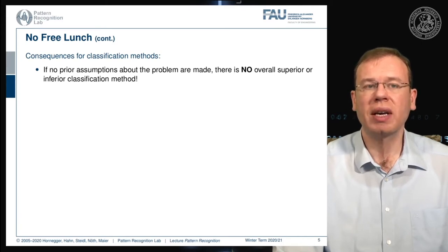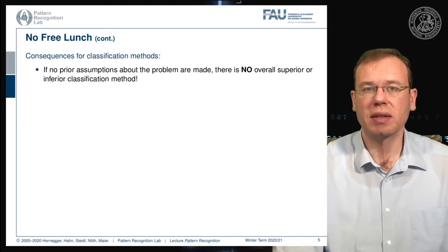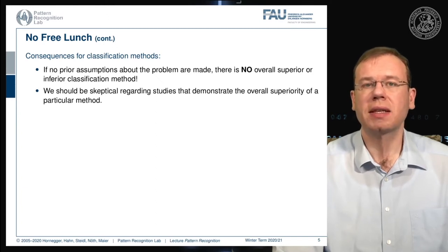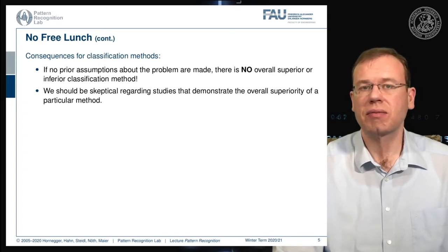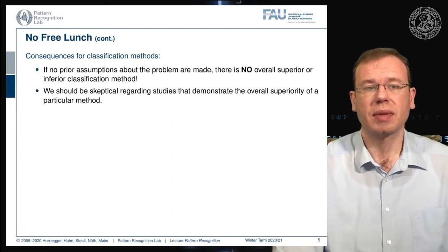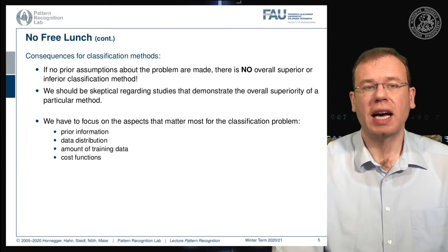This has consequences for classification methods: if no prior assumptions about the problem are made, there is no overall superior or inferior classification method. If you don't know the application or how the cost is generated, there is no way to pick the best algorithm. We should be skeptical of studies claiming overall superiority of a particular method. A paper claiming one algorithm is better than another for all problems would contradict the no free lunch theorem.